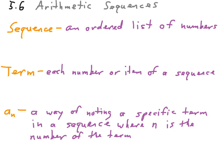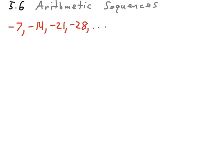Let's start looking at examples. So here we have a fairly standard arithmetic sequence, negative 7, negative 14, negative 21, and negative 28. And what we are tasked with is writing the next three terms in the sequence.